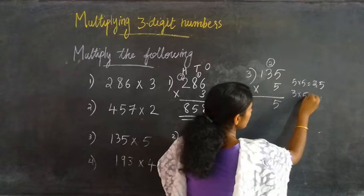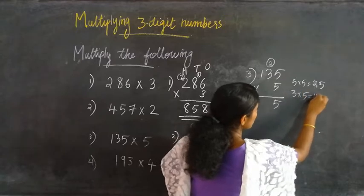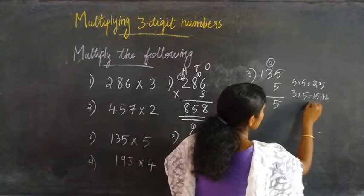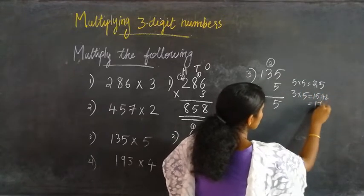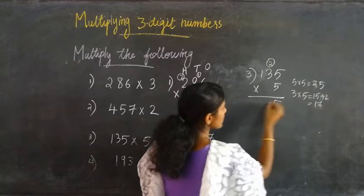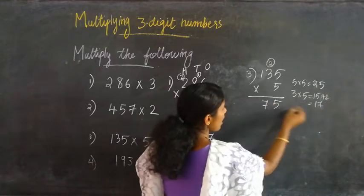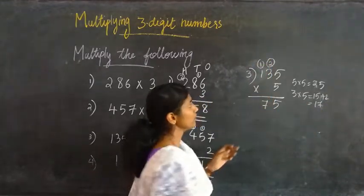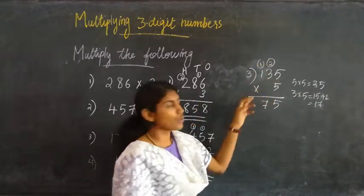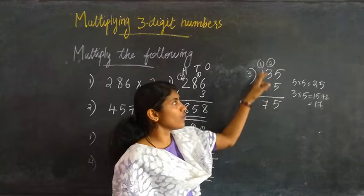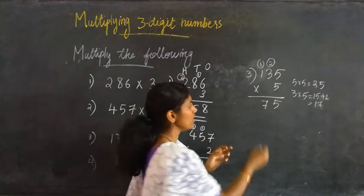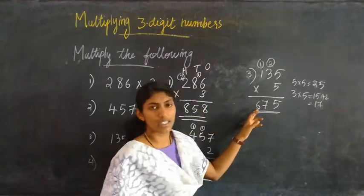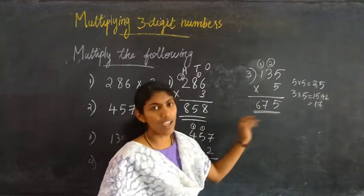3 into 5 is 15, plus 2 is equal to 17. Writing 7 here and 1 is carried over. Then 1 into 5 is 5, plus 1 is 6. So we got the answer 675.